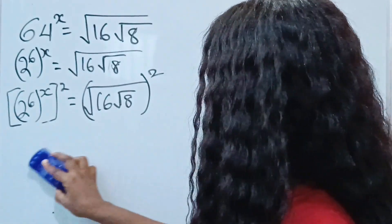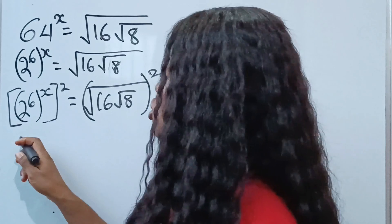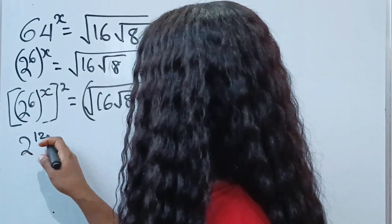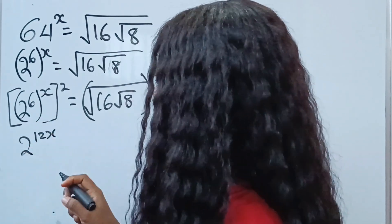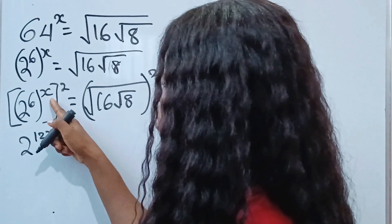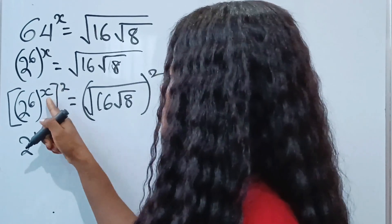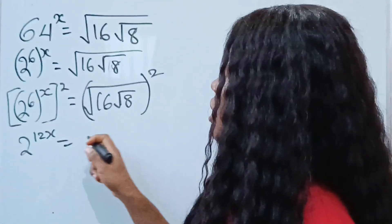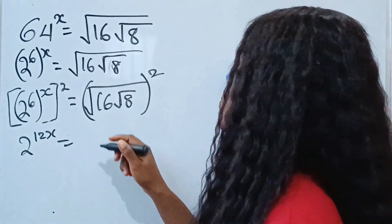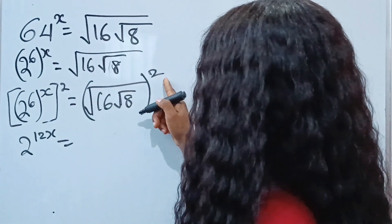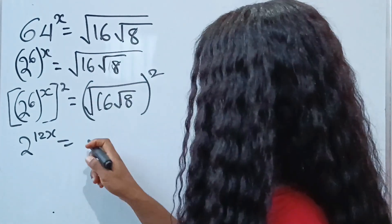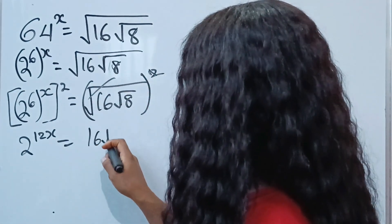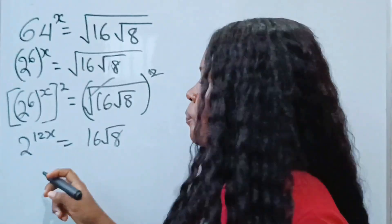Therefore, we can write this as 2 to the power of 12x, right? Because 6 times x gives us 6x, and 6x times 2 gives us 12x. This is equal to... the square root will multiply this, and we cancel to have 16 root 8.